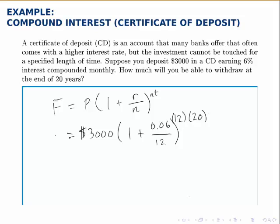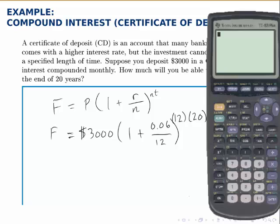And the only unknown is the future value F, and that's what we'll find when we evaluate this right side of the equation. So to do this, I'm going to start by simplifying what's inside the parentheses. So first I'll type in 1 plus 0.06 divided by 12. So what's inside the parentheses is 1.005.